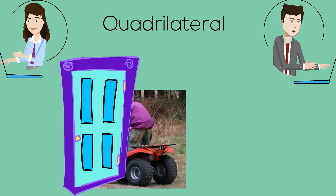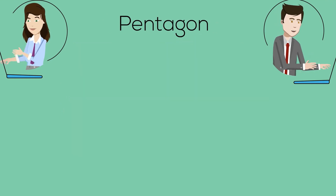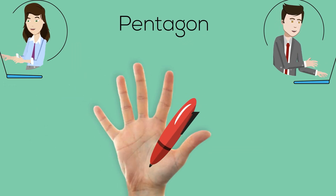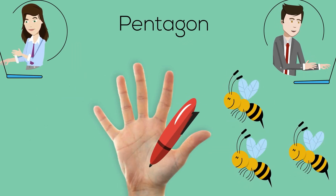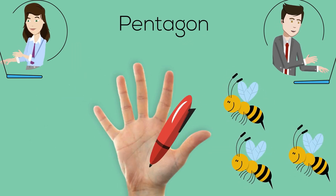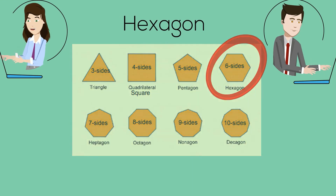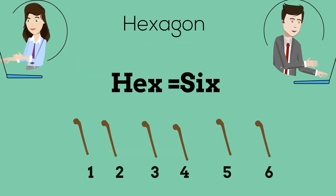5 sides is a pentagon, so imagine holding a pen with your five fingers and stabbing a beehive. A hexagon has six sides, so imagine picking up six sticks.